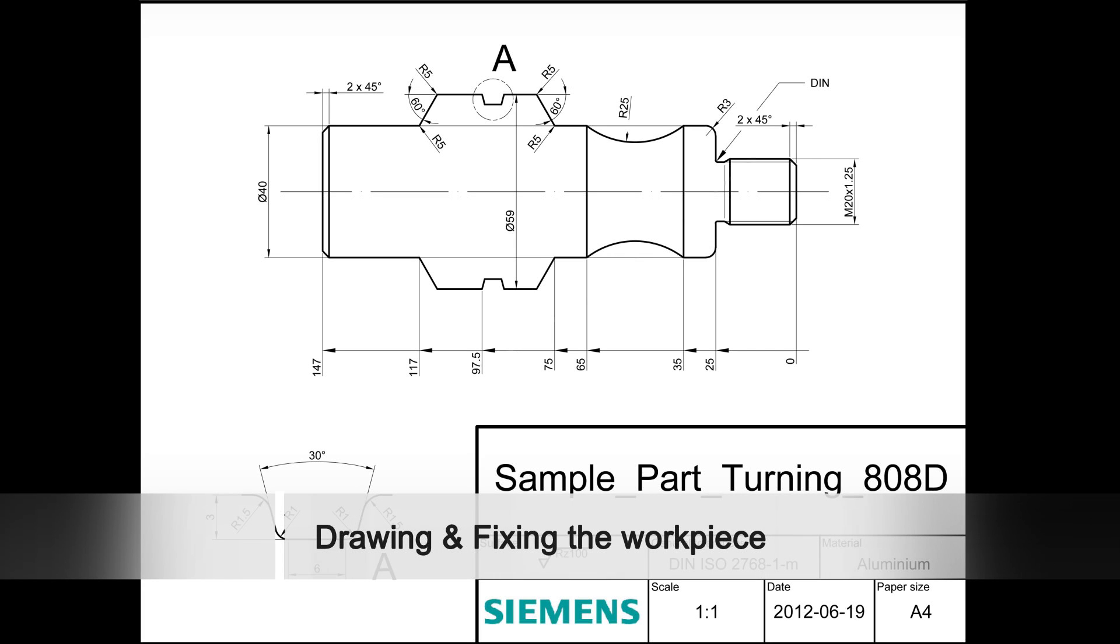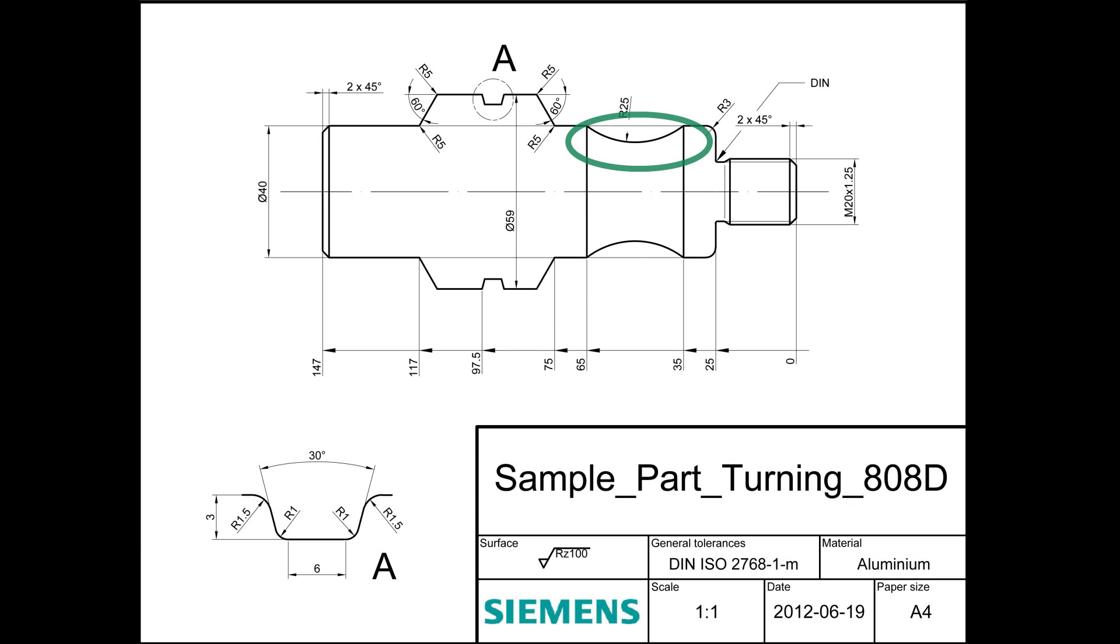This is our sample workpiece we want to make. On the right-hand side, you can see the thread including an undercut. There is also a large semicircle, and described with the letter A, there is a groove.